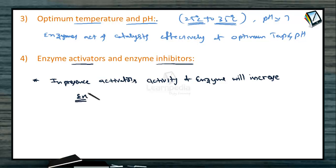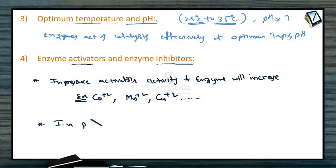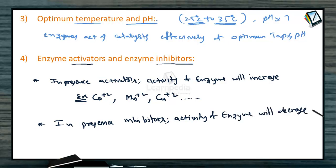For example, metal ions like cobalt (Co²⁺), present in cyanocobalamin (Vitamin B12), manganese (Mn²⁺), and copper are examples that increase the activity of the catalyst in many reactions. In the presence of inhibitors such as heavy metals like mercury or silver, the activity of the enzyme decreases. These are called inhibitors.